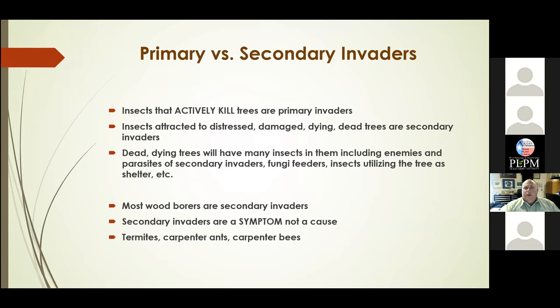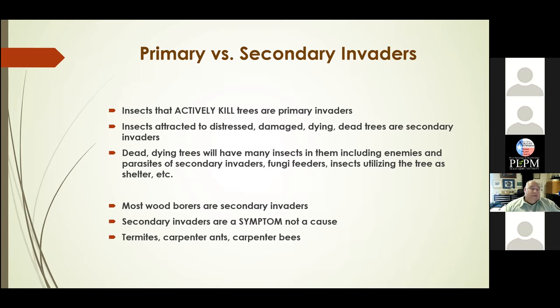We really have to distinguish between what's a primary and a secondary invader of a tree. An insect that actually goes into a tree and actively kills it is a primary invader. Insects that are attracted to distress, damage, dying, and dead trees — like from the freeze or construction damage — are secondary invaders. Dead and dying trees will have lots of things in them, including enemies and parasites of these secondary invaders, fungi feeders, and insects using rotted parts for shelter. Most wood borers are actually secondary invaders — they're the symptom, not the cause of tree mortality.